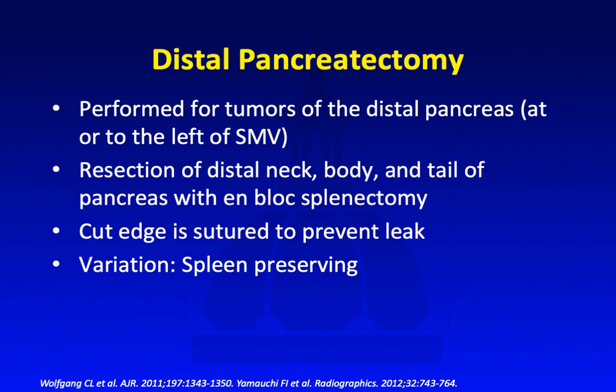The distal pancreatectomy is performed for tumors of the distal pancreas at or to the left of the SMV. It involves resection of the distal neck, body, and tail of the pancreas with en-bloc splenectomy. The cut edge of the pancreas is sutured to prevent a leak. A spleen-preserving variation can also be performed, though it takes a little bit longer.